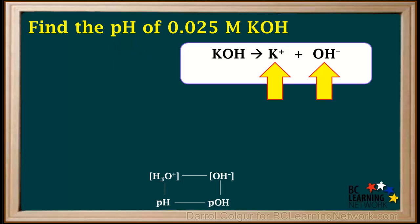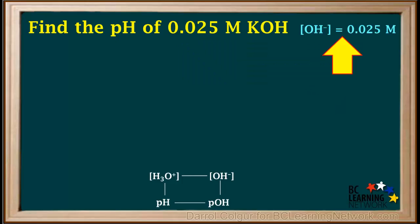KOH is a strong base which dissociates completely into one K plus ion and one OH minus ion. So the hydroxide ion concentration in 0.025 molar KOH is 0.025 molar. We'll make a note of that here.